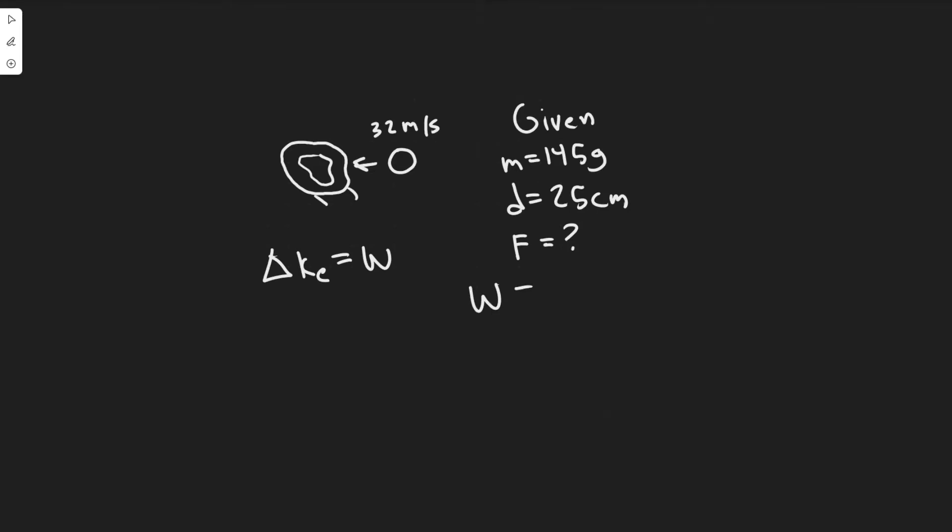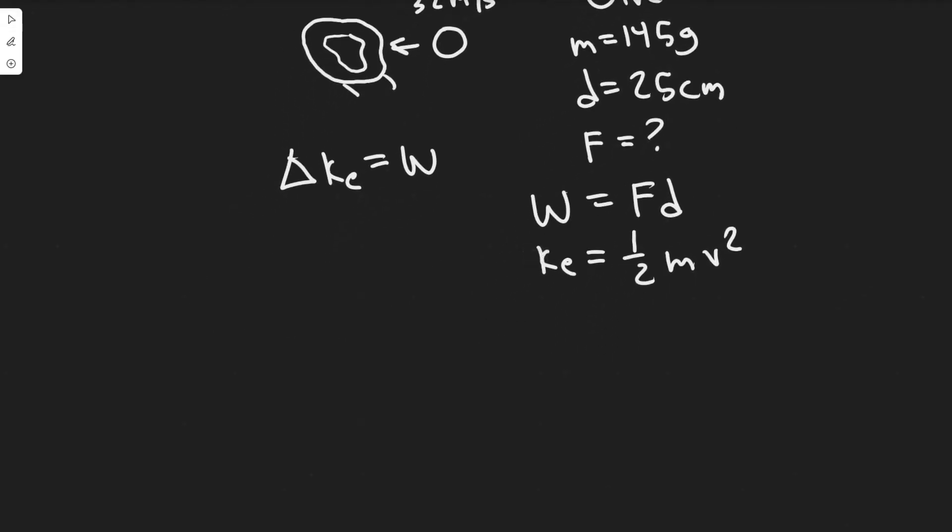So there's a few things you need to know. You need to know the formula for work, which is work equals force times distance. And then you also need to know the formula for kinetic energy, which is one half mv squared. So by this rule, or this law, we know that the change in the kinetic energy is equal to the work.